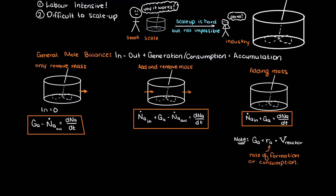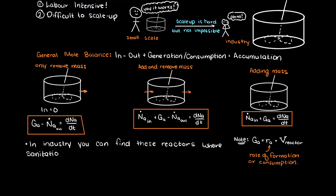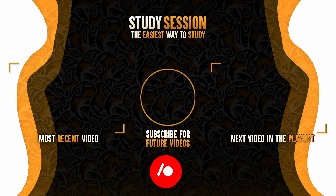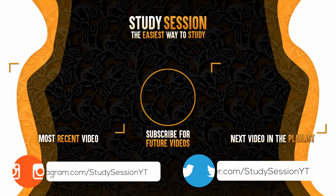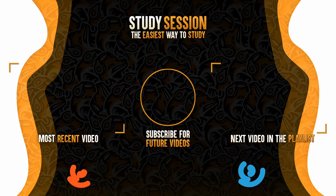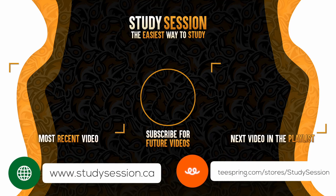In conclusion, semi-batch reactors are just batch reactors except we can now add or remove mass to help us achieve a better product. In terms of industrial use, these types of reactors are commonly found in the fine chemical, cosmetics, pharmaceuticals, food, and other industries where sanitation and temperature-sensitive products are necessary. Thank you for watching, and I hope it helped your understanding of semi-batch reactors. If you enjoyed, please like, subscribe, and consider checking out our Patreon page. If you have any comments, questions, or concerns, please leave a comment below.